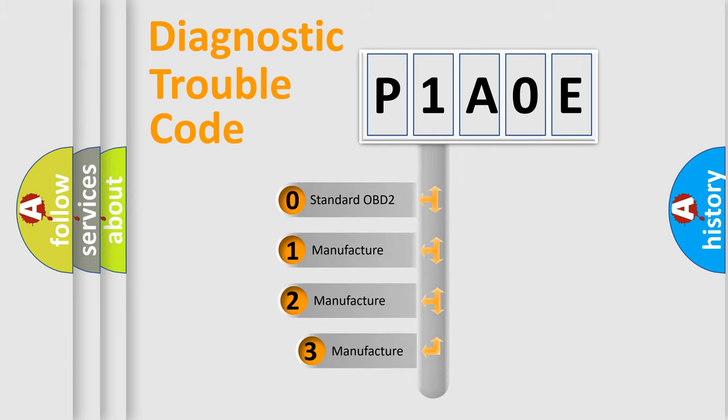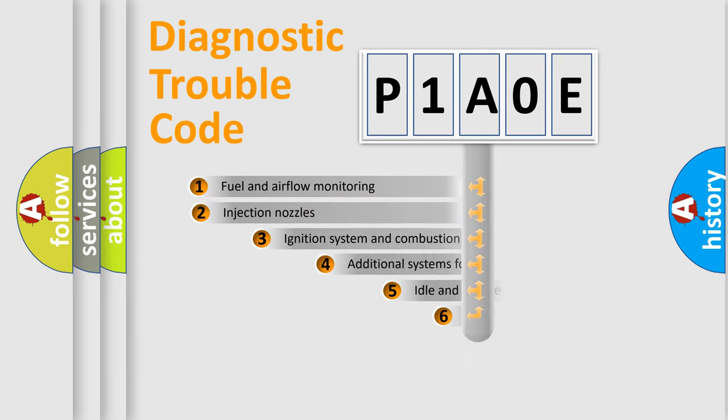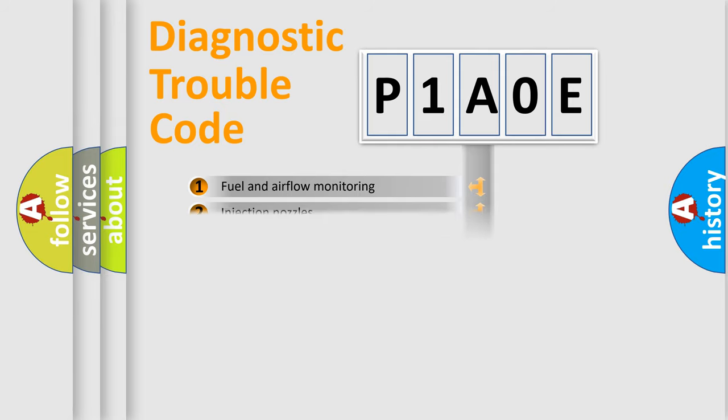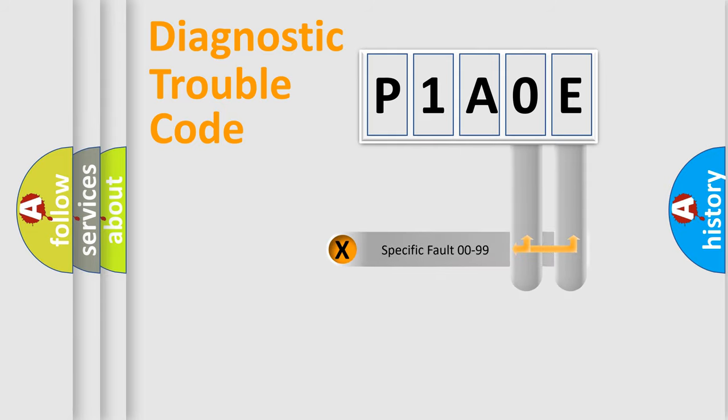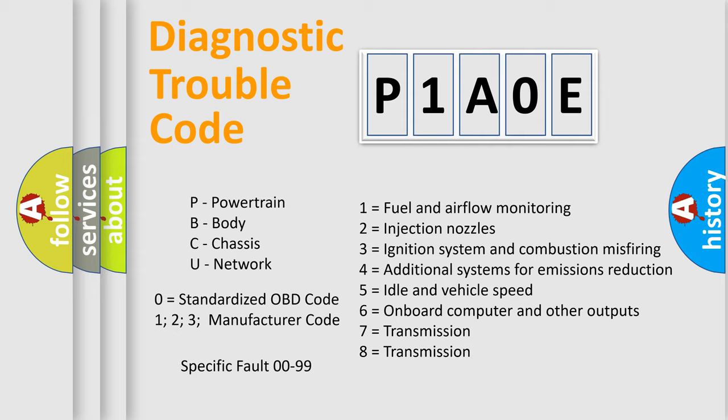If the second character is expressed as zero, it is a standardized error. In the case of numbers 1, 2, 3, it is a manufacturer-specific expression of the car error. The third character specifies a subset of errors. The distribution shown is valid only for the standardized DTC code. Only the last two characters define the specific fault of the group. Such a division is valid only if the second character code is expressed by the number zero.